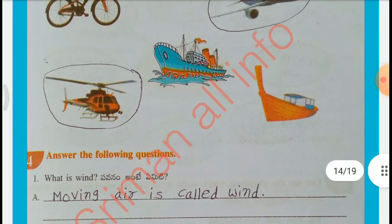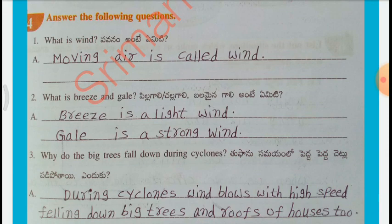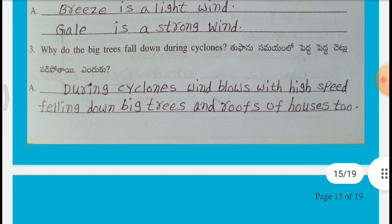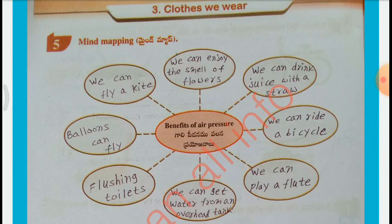Answer the following questions. What is wind? Moving air is called wind. What is breeze and gale? Breeze is a light wind; gale is a strong wind. Why do big trees fall down during cyclones? During cyclones, wind blows with high speed, felling big trees and roofs of houses too. Benefits of air pressure: we can enjoy the smell of flowers, drink juice with a straw, ride a bicycle, play a flute, get water from an overhead tank.